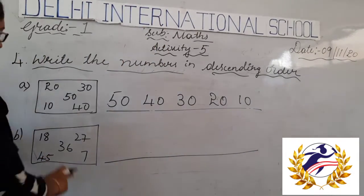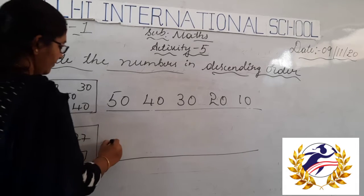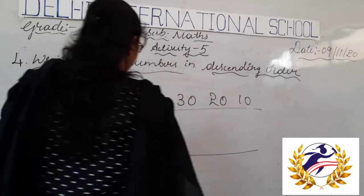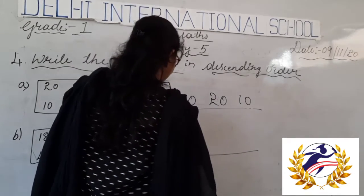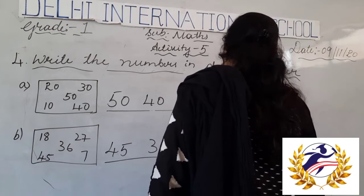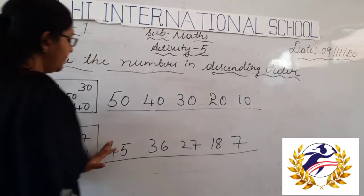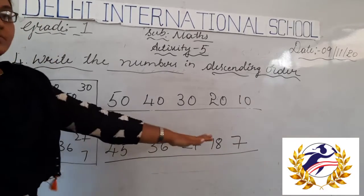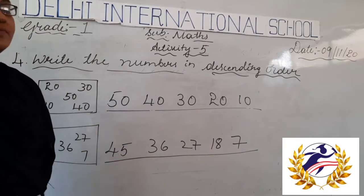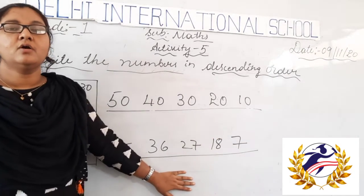Next, in this box, the greatest number is 45. After 45 comes 26, then 27, then 18. Descending order means arranging numbers from bigger to smaller. This is what descending order is.